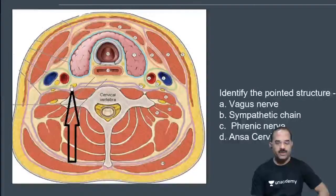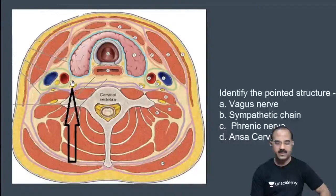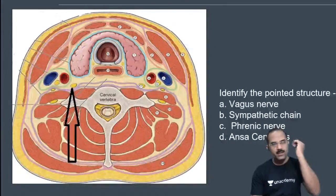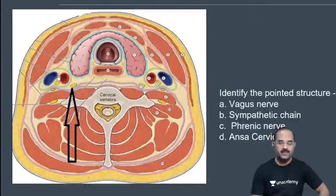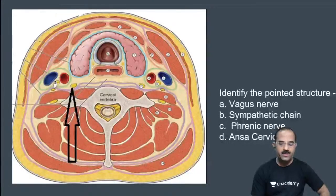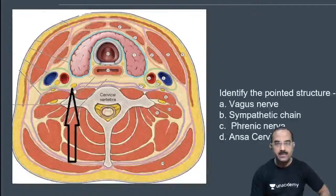The posterior medial relation of the carotid sheath is the sympathetic chain. Within the carotid sheath lies the common carotid and the internal carotid artery, the internal jugular vein, and the vagus nerve. The posterior medial relation of the carotid sheath is the sympathetic chain.